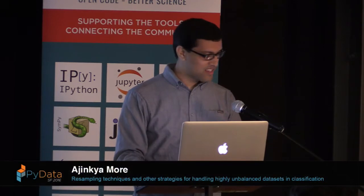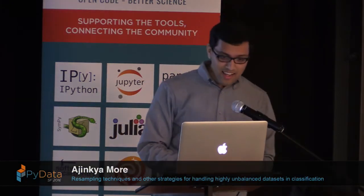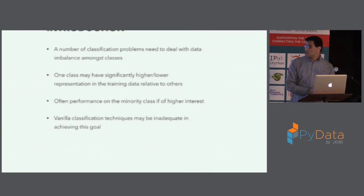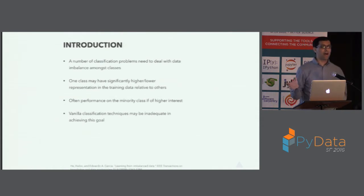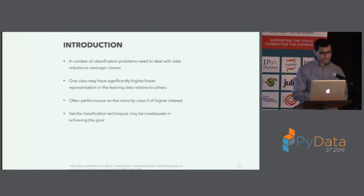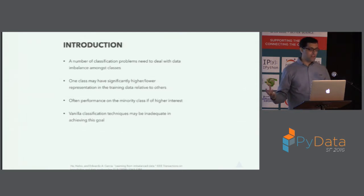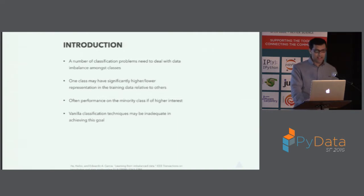Thank you everyone for showing up for the last talk of the day. I'll be talking about some techniques for handling unbalanced datasets in your classification tasks. A number of classification problems need to deal with class imbalance, and we say we have a class imbalance problem when one class has a significantly higher or lower representation in the training data distribution. If you take your favorite classifier and feed it this unbalanced dataset, you might not get the performance you're looking for.